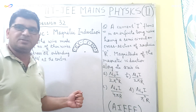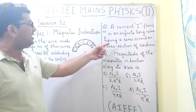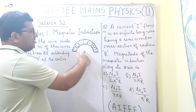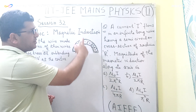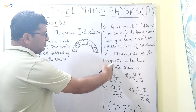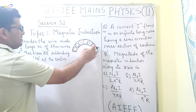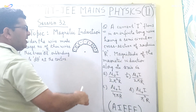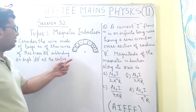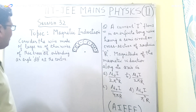In this question, a current I is flowing in an infinite long wire having a semicircular cross-section of radius R. So this is a semicircular wire with current I flowing through it, and the radius of this semicircular wire is capital R. We have to find the magnitude of the magnetic induction along its axis. I have already drawn a figure showing this semicircular infinite long wire with radius R.